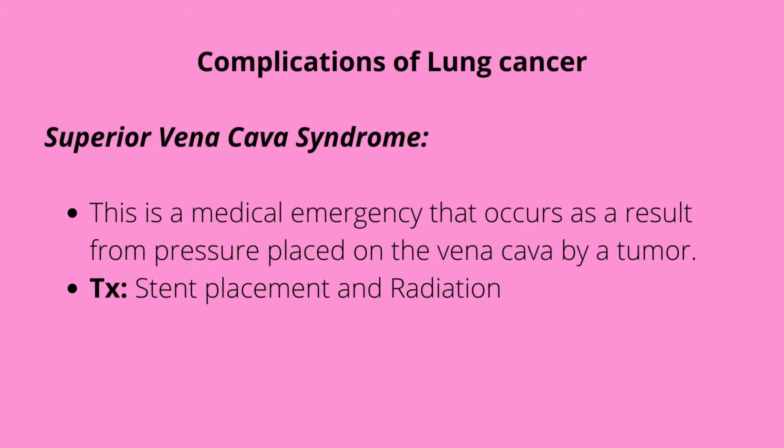One of the common complications with lung cancer is superior vena cava syndrome. This is a medical emergency that results from pressure placed on the vena cava by the tumor. When you have pressure on your vena cava your cardiac function is affected. We need to release this pressure by treating the tumor — placing a stent to open up the vena cava as well as radiation of the tumor causing the pressure.